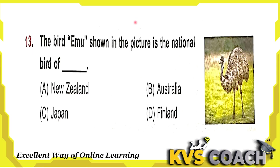Next question: the bird Emu shown in the picture is the National Bird of — option A is New Zealand, whose National Bird is Kiwi. Option B is Australia — Australia's National Bird is Emu. Option C is Japan — Japan's National Bird is Green Pheasant. Option D is Finland, whose National Bird is Whooper Swan. So the right answer is option B: Emu is the National Bird of Australia.